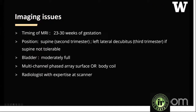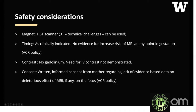We usually perform MRI between 23 and 30 weeks of gestation. The patient is supine or in left lateral decubitus if in the third trimester. The bladder is moderately full and we use a multi-channel phased array surface coil or body coil. A radiologist is available at the scanner to review images and decide if modifications are needed. We use a 1.5 tesla scanner, though 3 tesla can be used with good expertise despite dielectric effect challenges. There is no evidence of increased risk from MRI at any point in gestation per ACR policy.